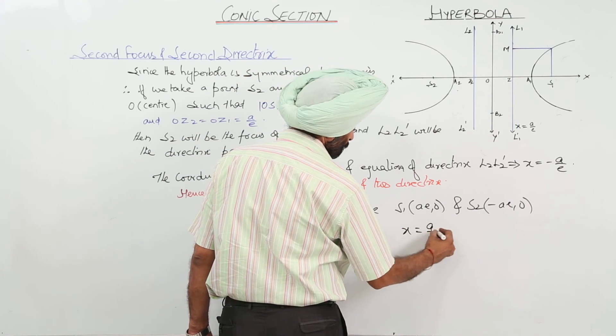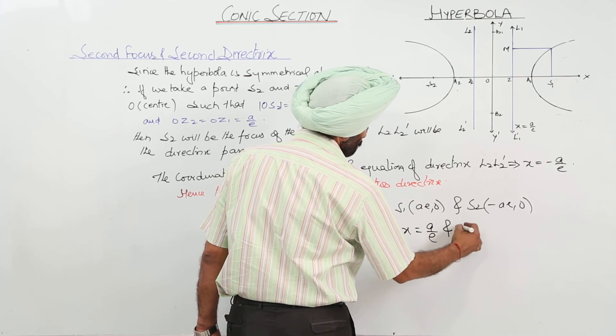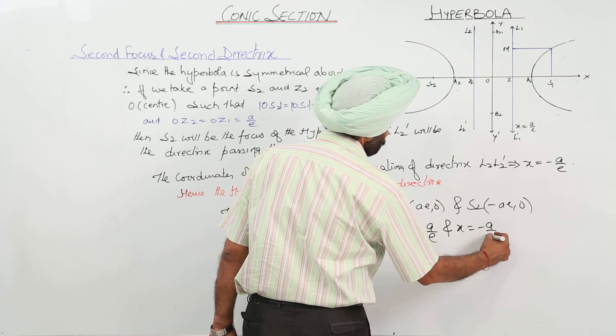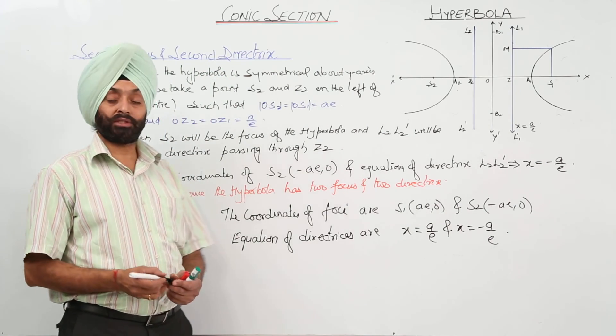And the equations of directrices are X is equal to A upon E and X is equal to negative A upon E. So, this is all about the second focus. Thank you.